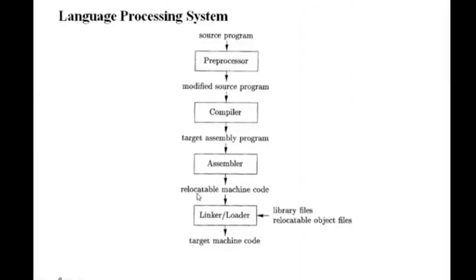When running code, addresses are needed — which address holds the first variable, the second variable, and so on. If fixed addresses are used and the program is saved somewhere else, or if you move the program from main memory to secondary memory and back, you have to change all the instructions and the addresses of all variables. That's why, when converting to machine code, it converts into relocatable machine code.